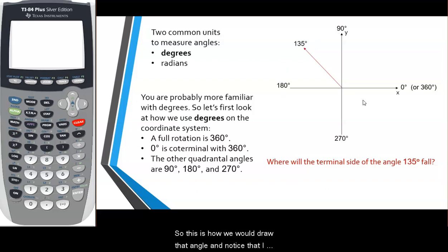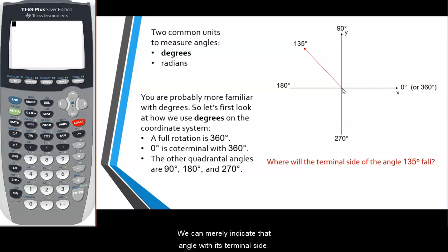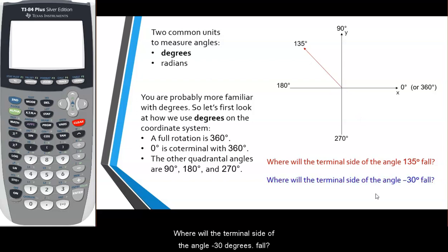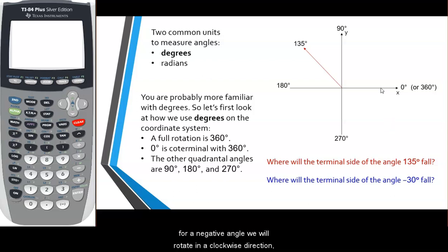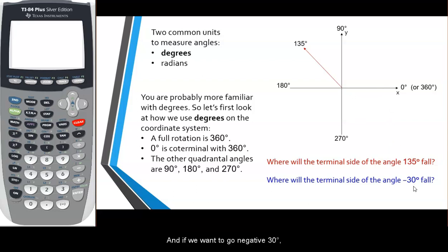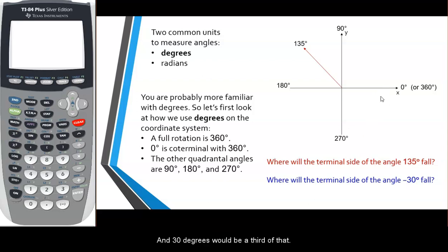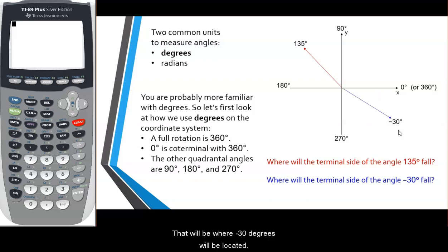This is how we would draw that angle. Notice I didn't have to draw the initial side — often we don't draw it; we can merely indicate the angle with its terminal side. For negative 30 degrees, we rotate in the clockwise direction starting from the positive x-axis. This fourth quadrant is 90 degrees total, and 30 degrees would be a third of that. So imagine rotating a third of the way down into that quadrant — that will be where negative 30 degrees is located.